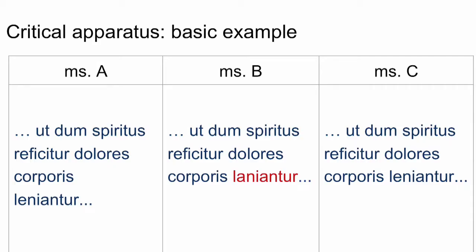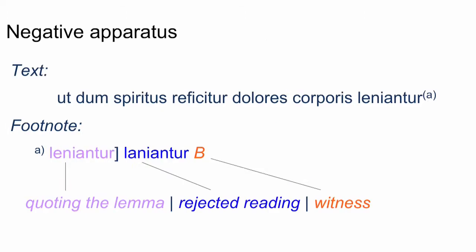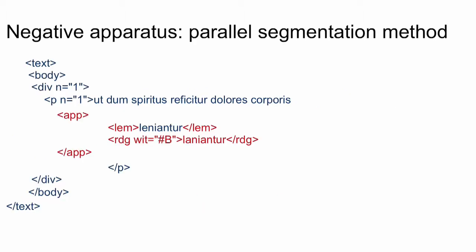So let's see what it would mean in terms of encoding. Let's start with the same basic example, with manuscript B having a mistake on the word 'lanianto.' In a negative apparatus we would print and encode it just like that with the parallel segmentation method — that is the example we saw last module.